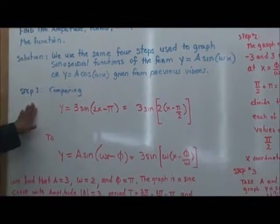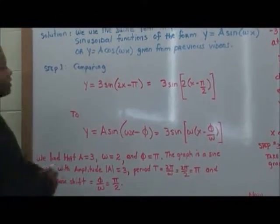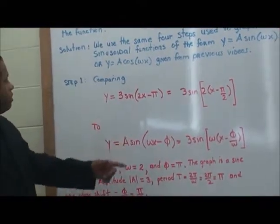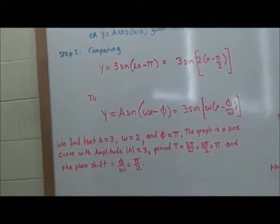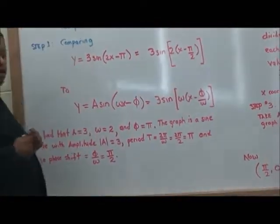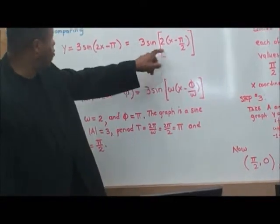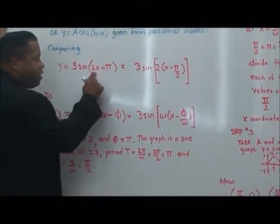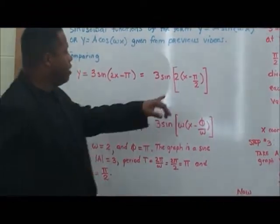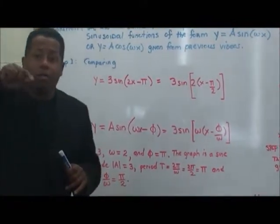Step one: we compare y equals 3·sine(2x minus π), which equals 3·sine(2(x minus π/2)), to the standard form. We factor out ω = 2. So this is ω times x minus φ/ω — in this case φ/ω equals π/2, with ω equal to 2, giving π/2.